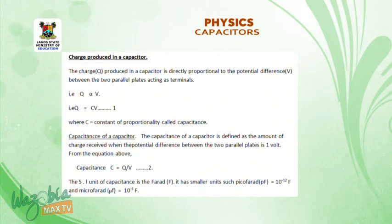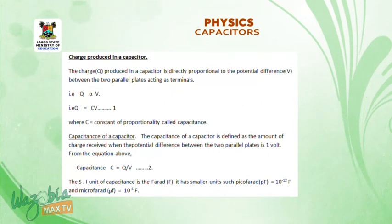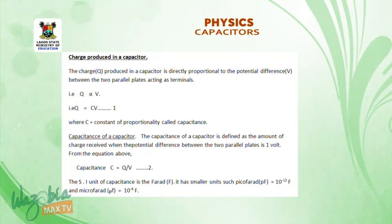The charge Q produced in a capacitor is directly proportional to the potential difference V between the two parallel plates acting as terminals. That is, Q is directly proportional to V. Therefore, Q will be equal to CV, where C is a constant of proportionality called capacitance.